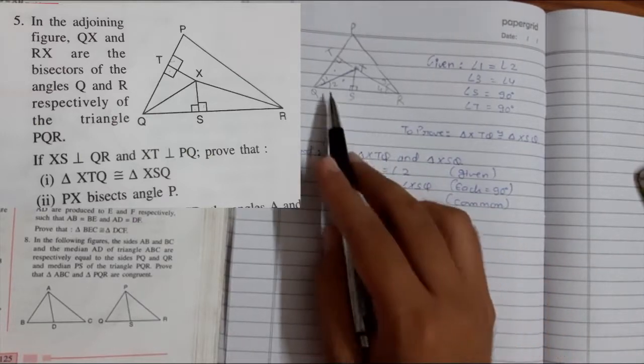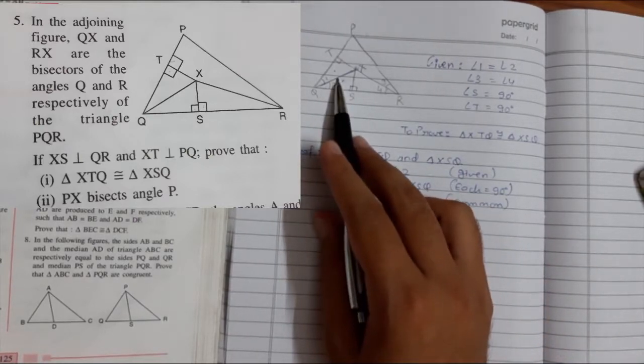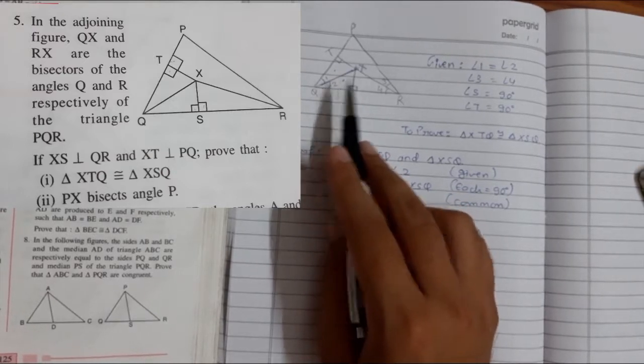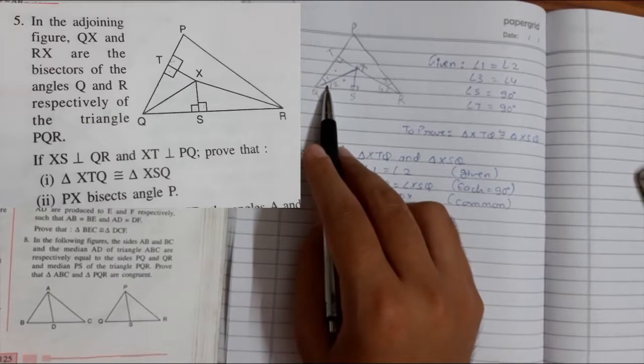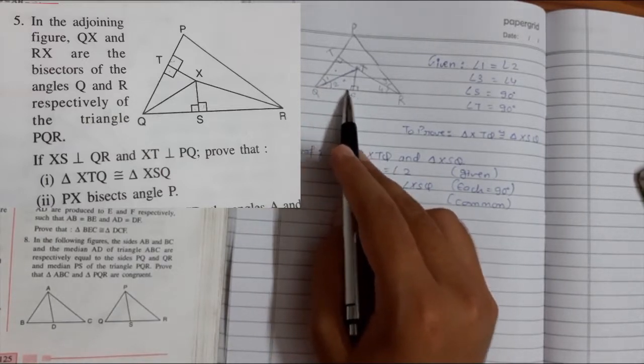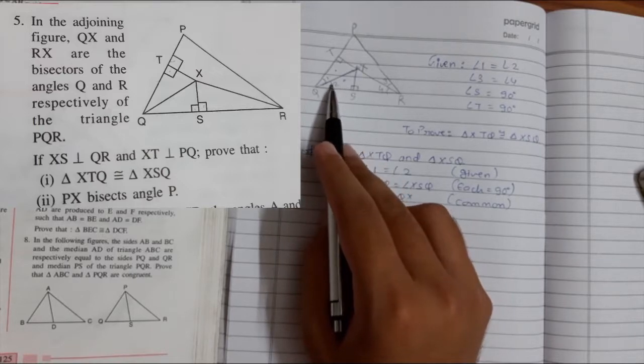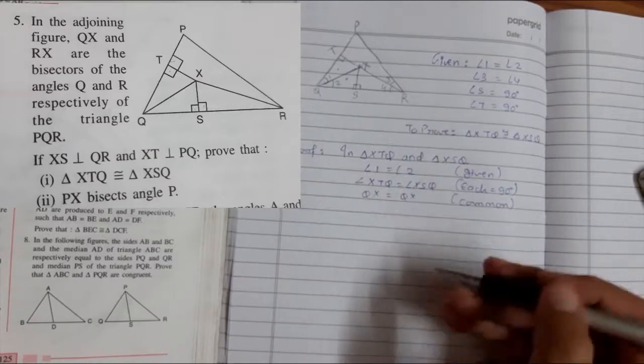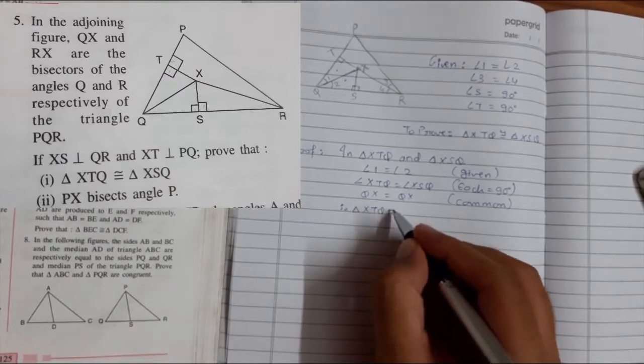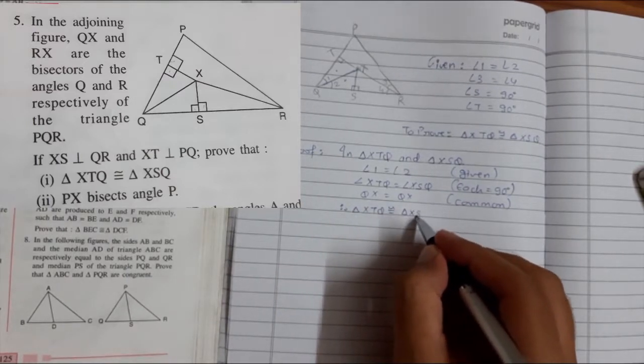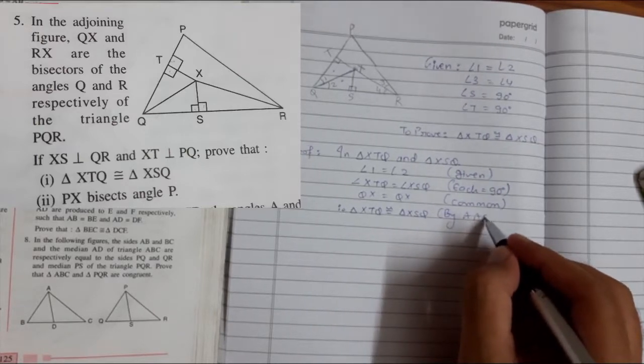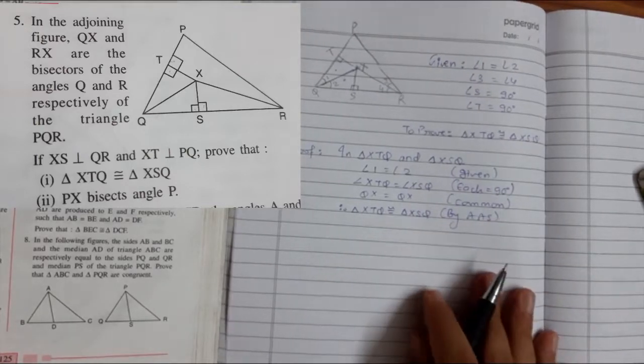We got the three things. We have one angle, one side, and another angle. So right now these two angles and this side is not in the middle, so we cannot use angle side angle. But we can say angle angle side. Therefore triangle XTQ is congruent to triangle XSQ by angle angle side congruency criteria.